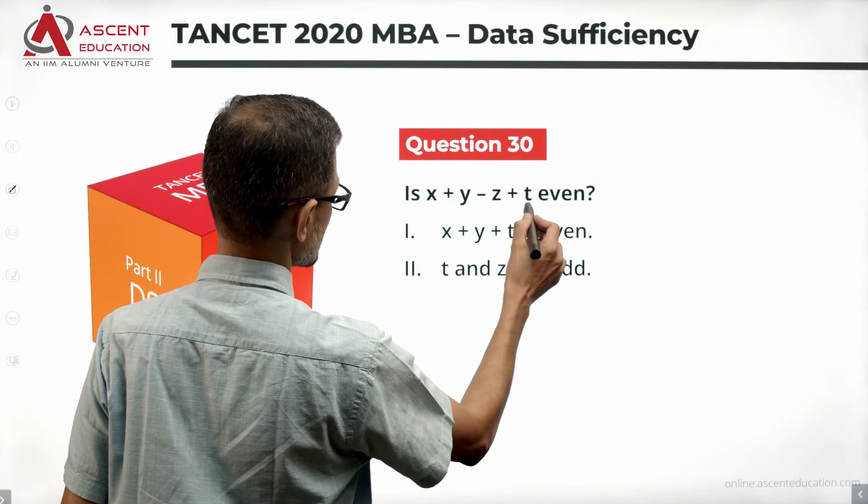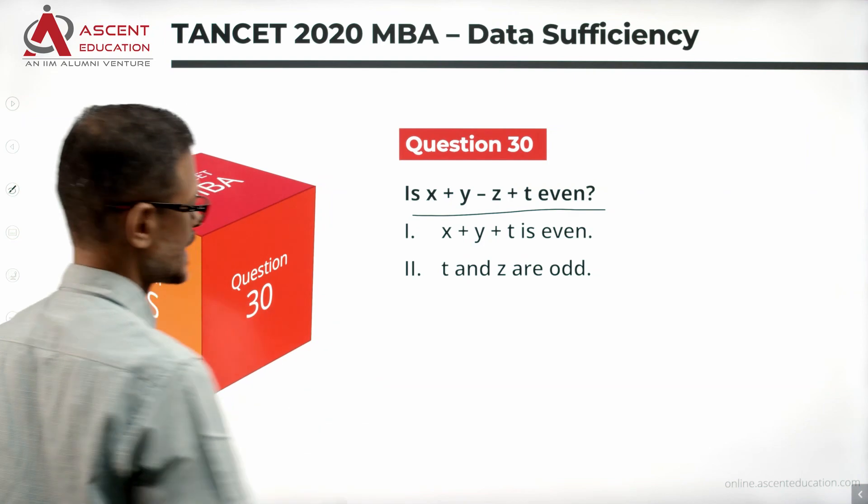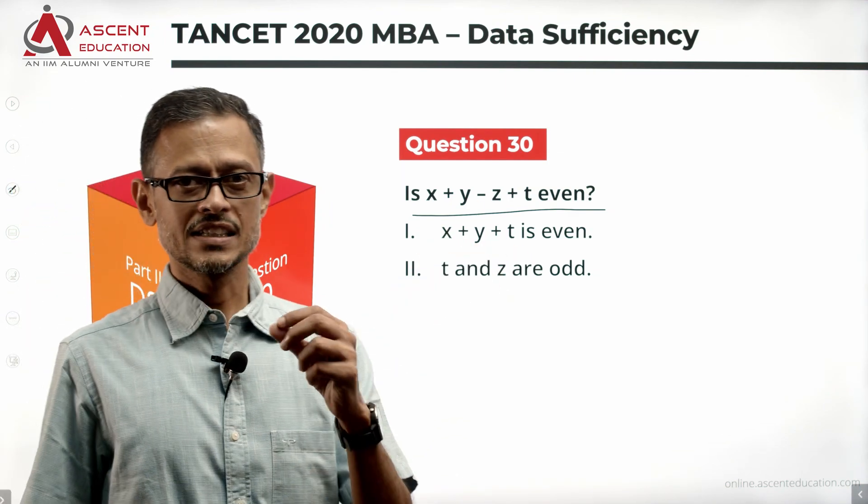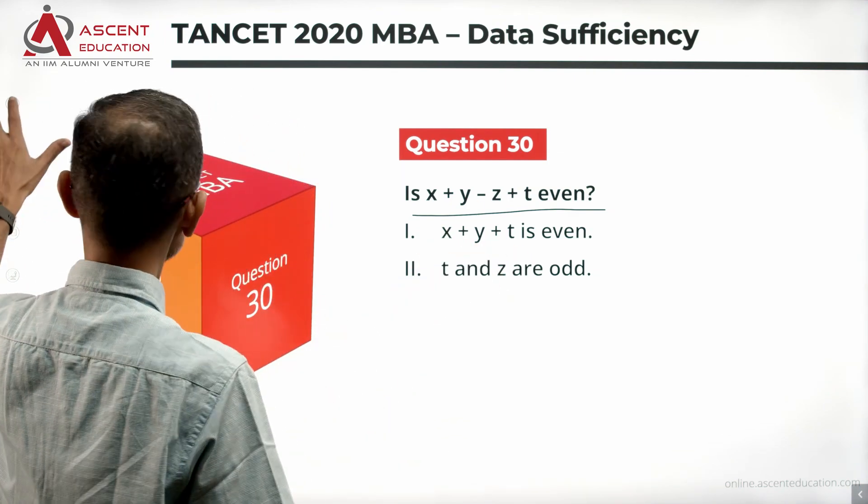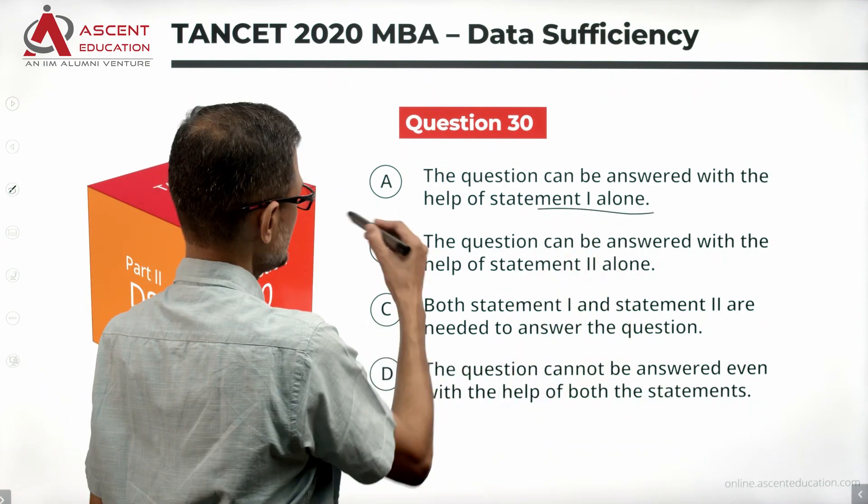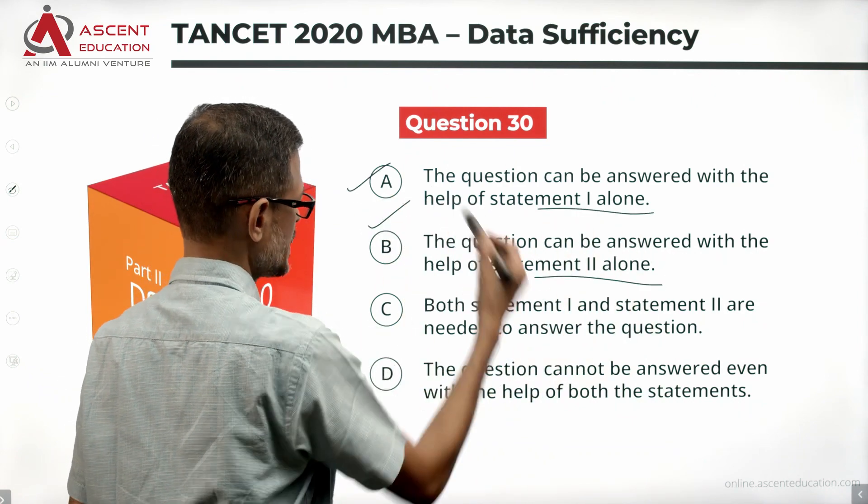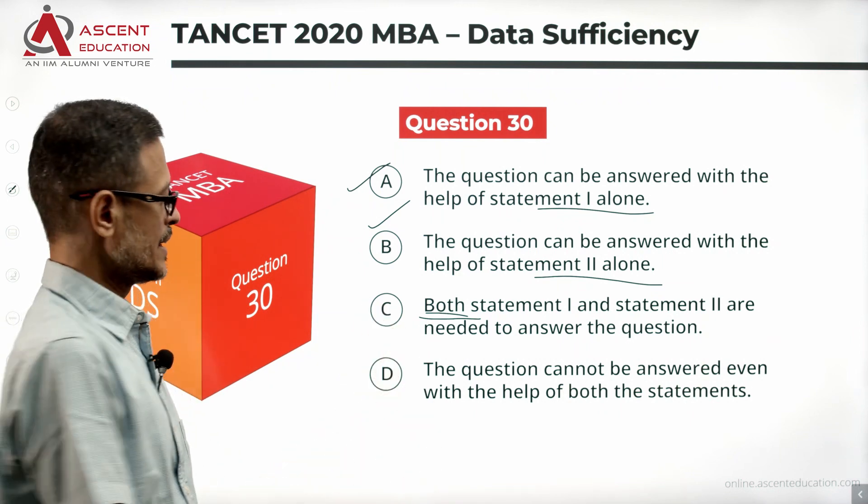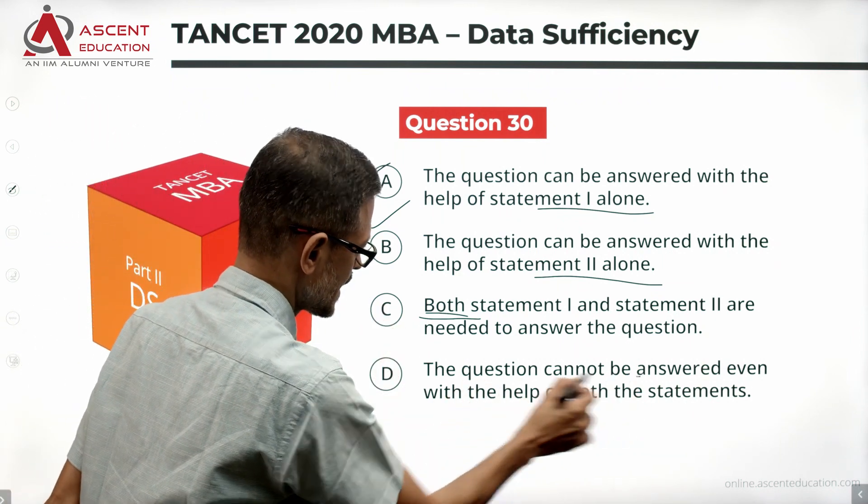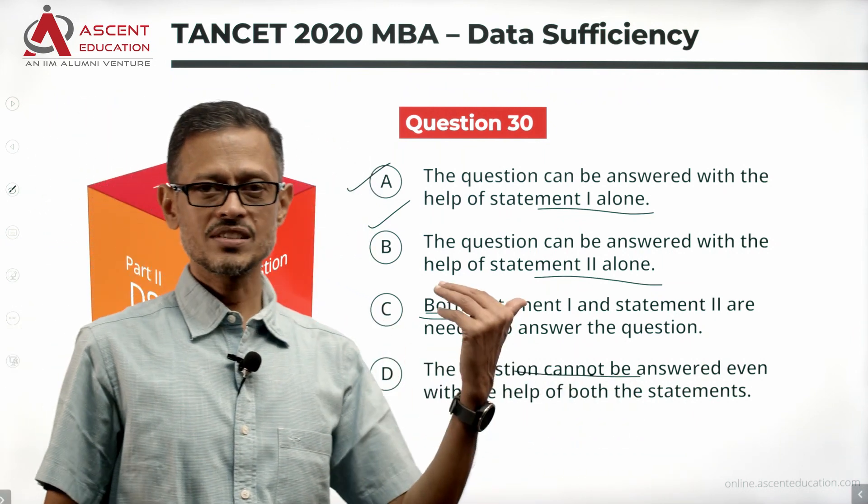Is x plus y minus z plus t even? Let's take a look at the statements in a while. What are the four answer options? One alone is sufficient, it's A. Two alone is sufficient, it's B. Together both statements one and two, it's C. If the given data is not sufficient, cannot be answered, then the answer option is D.